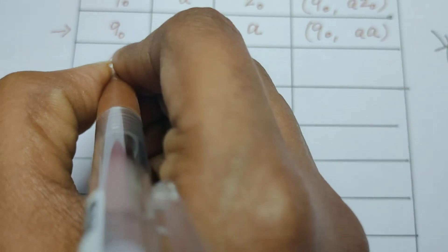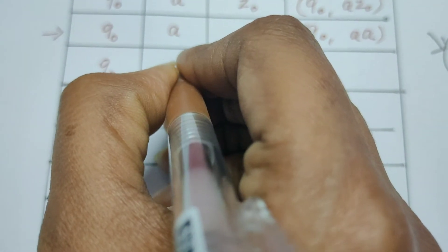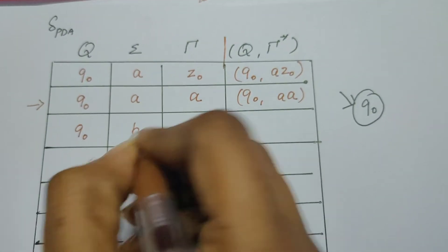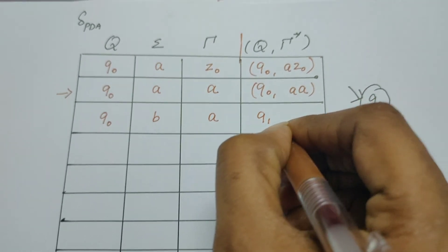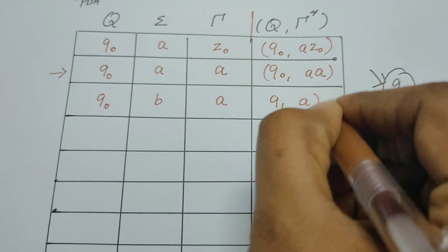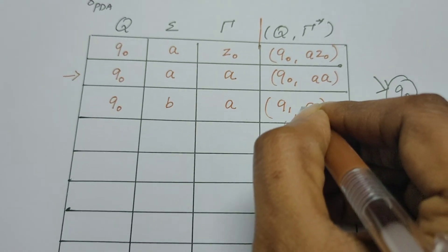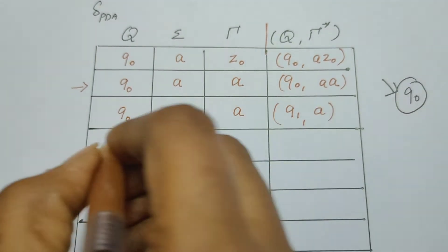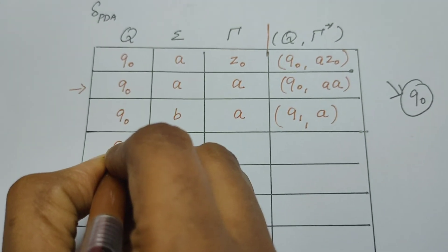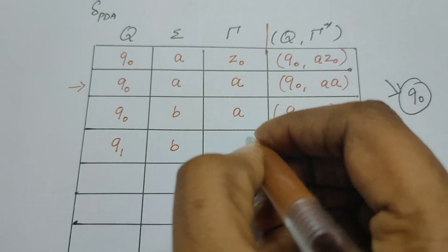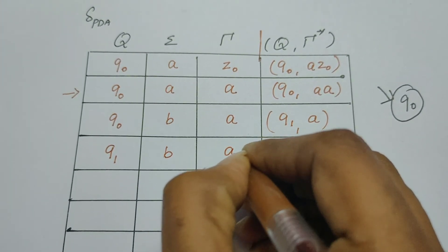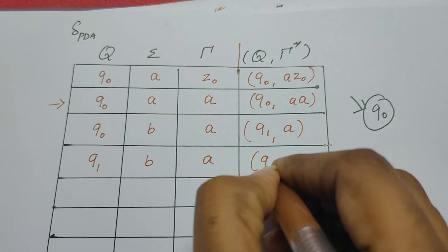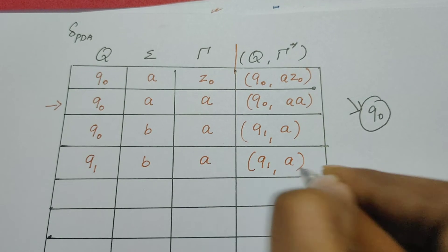At some point from state q0, it reads b. When it reads b, the top of the stack is a. The state changes to q1 and there is no operation on the stack — the top remains a with nothing pushed above it. From q1 it continues reading the remaining b's. Every time it reads b, a is at the top of the stack and it stays in q1 with no operation on the top of the stack.